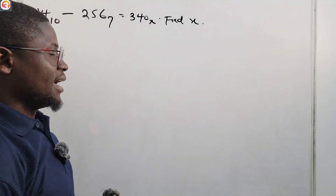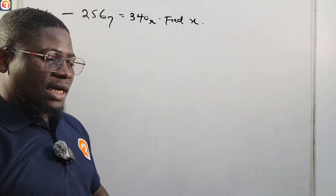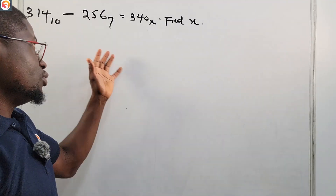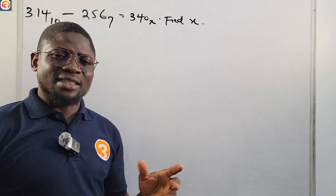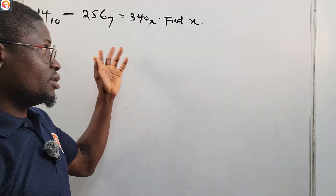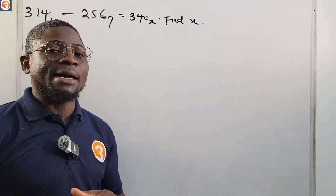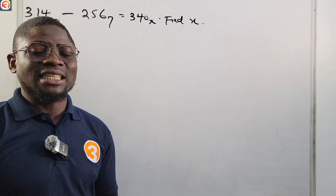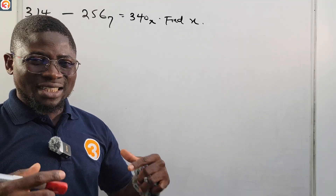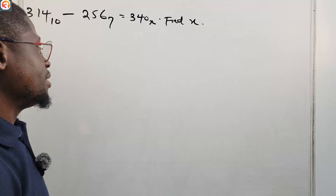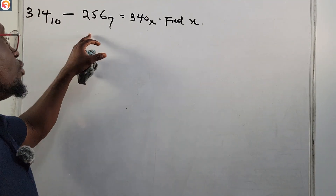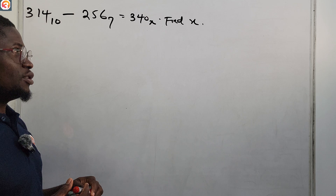Hello guys, this is one of the assignments I give to my students that borders on number bases. We're going to do this, and after we're done, the other assignments I gave also on number bases should be easy because they almost follow a similar pattern. After the end of this class I'm also going to add an extra assignment so that you can use it to test yourself and understand the topic better. The problem given is: 314 base 10 minus 256 base 7 equals 340 base x.